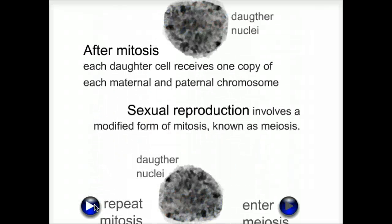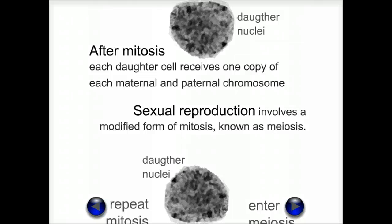During mitosis, these chromosomes align on a molecular machine known as the mitotic spindle. After mitosis, each daughter cell receives one copy of each maternal and one copy of each paternal chromosome. Mitosis is the process that is responsible for the replication of cells within your body.